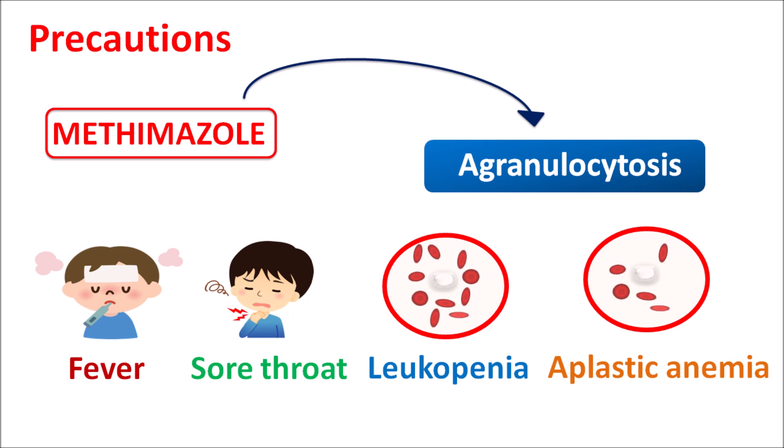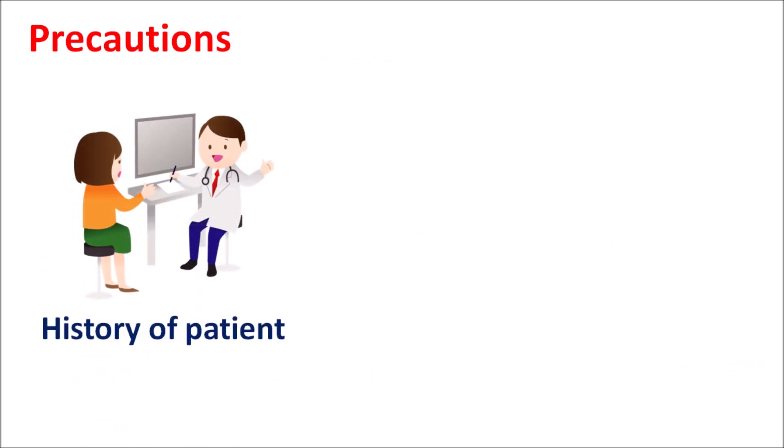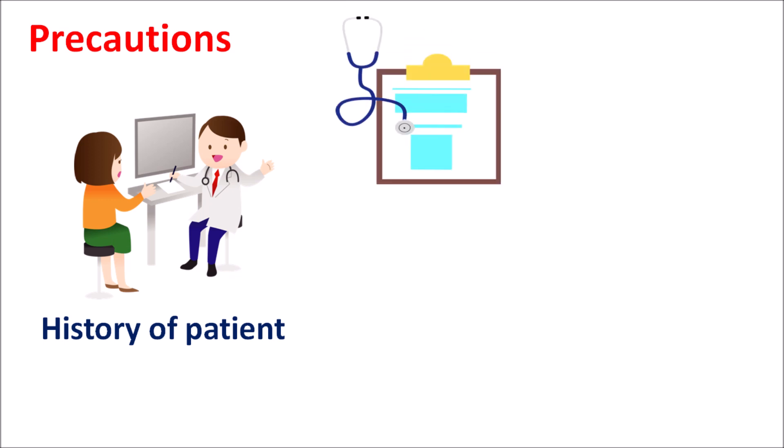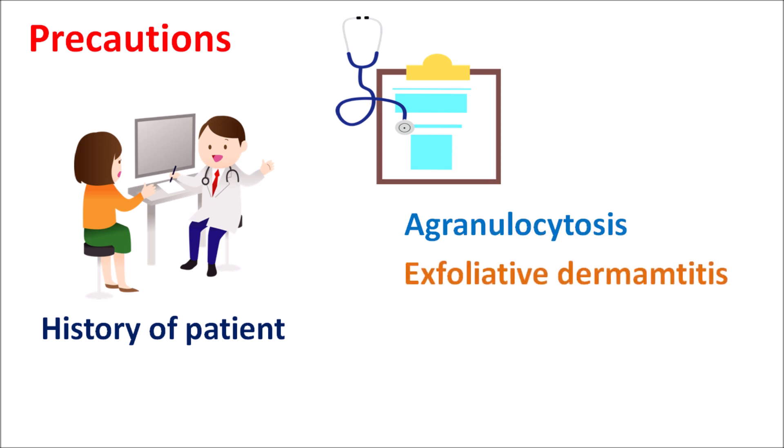Additional indicators include leukopenia — decreased leukocyte count — and aplastic anemia resulting in loss of blood cells. Because of these risks, methimazole should be carefully given to patients with any increased risk of agranulocytosis. Patients with a previous history of agranulocytosis, exfoliative dermatitis, aplastic anemia, or severe hepatitis should not receive this drug, as it can further increase fatal agranulocytosis and other systemic complications.